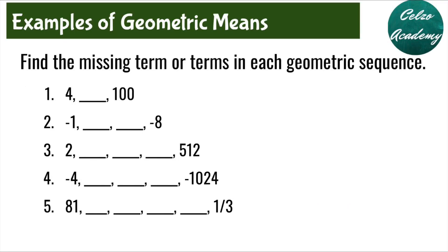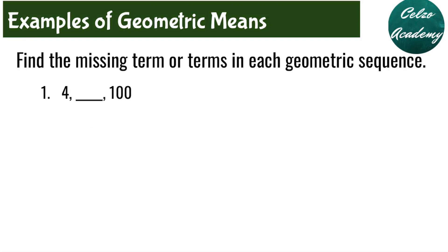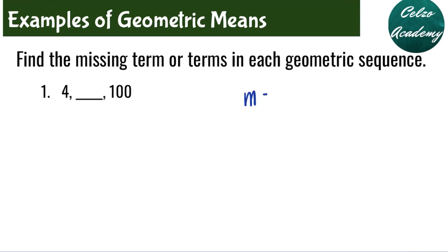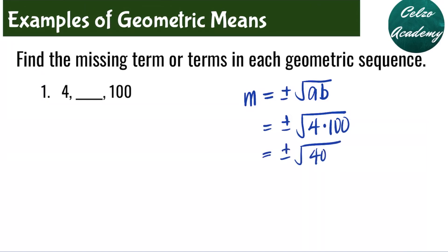Here are the five examples. Give it a try and play the video whenever you're ready for the solution. Example number one: find the missing term in the geometric sequence. For question number one, we are only inserting one geometric mean. In solving for the geometric mean, we are using the formula m is equal to plus or minus the square root of the first term a multiplied by the last term b. So in this case, we have plus or minus the square root of 4 times 100, and that is plus or minus the square root of 400.